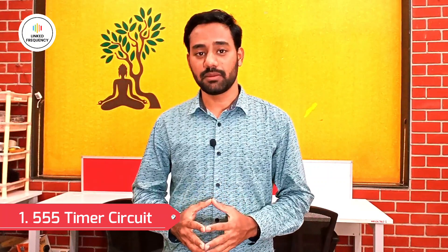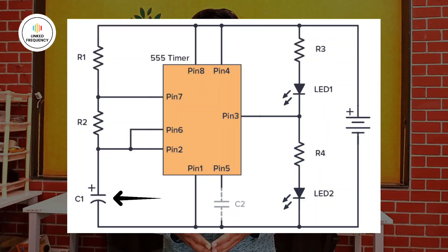Let us consider three fundamental examples to explain how capacitors play a vital role in the electronic industry. The first example is a timing circuit using the 555 timer. The 555 timer is a digital integrated circuit available in SMD as well as through-hole component form, used for generating a PWM signal for various applications. This is how the circuit of a PWM generator using the 555 timer looks.